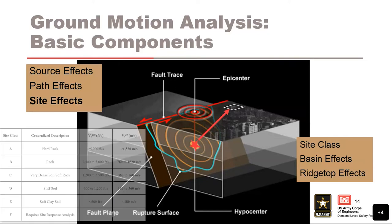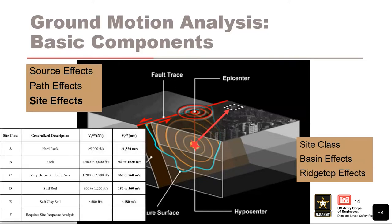The third component is site effects — how does your site respond to the incoming ground motions? Whether you're in a basin or on top of a ridge can strongly affect your ground motions. Engineers have characterized site response into six classes (A through E) based on seismic geophysical velocity, with attenuation relationships for each class. Liquefaction occurs in site classes D or E; hard rock site class A won't liquefy but produces high-frequency ground motions.